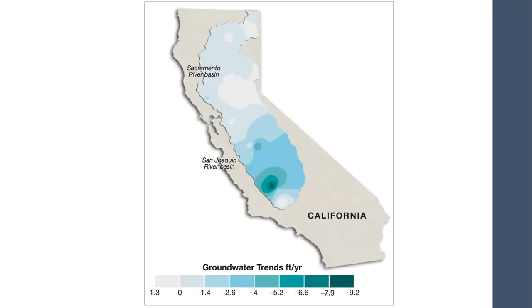When we look at groundwater trends in California — again, the San Joaquin basin — some places have dropped about 9.2 feet per year, which is pretty significant.